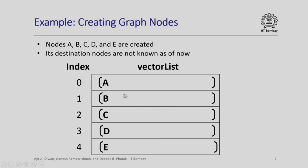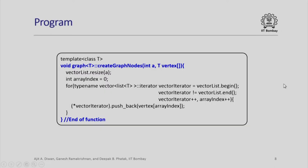Let us look at creating graph nodes. We assume nodes A, B, C, D, E are to be created and their destination nodes are not known as of now. Our vector list will look like this: the first element in each vector list will be initialized to A, B, C, D, E — the sample nodes we have considered — and there will be nothing else for the time being. The program for the create graph nodes function is very simple.